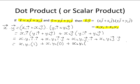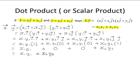Plus x2y1 the dot product of j with i which is 0 plus x2y2 and the dot product of j with j is 1. This is equal to x1y1 plus x2y2 and there is the result.